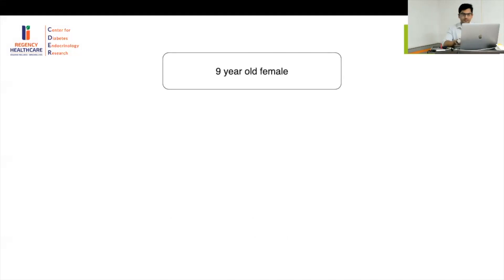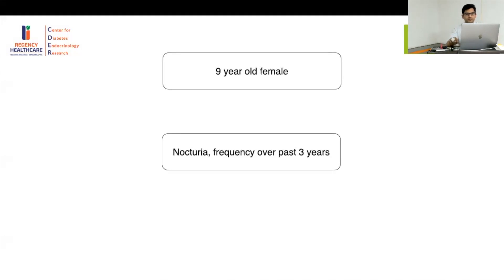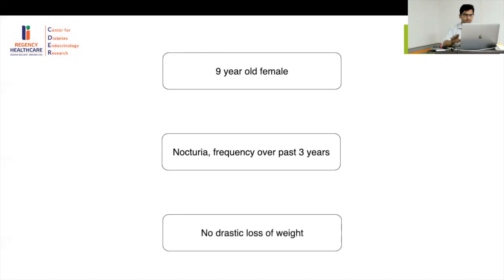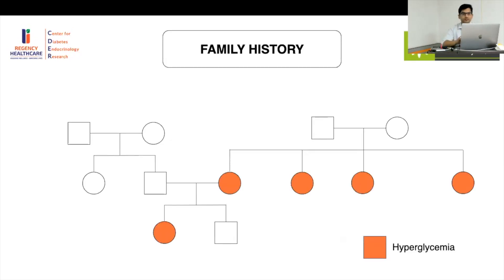Now discussing the fifth case: a 9-year-old female who presented with frequent urination, more so at night, with bed-wetting over the past three years. There was no drastic weight loss, no increased water intake, and no other complications. When we asked about family history, the father realized that his wife and all three sisters had high glucose levels around 140–145. They had not done anything about it, thinking it was normal, and did not connect it to this child.